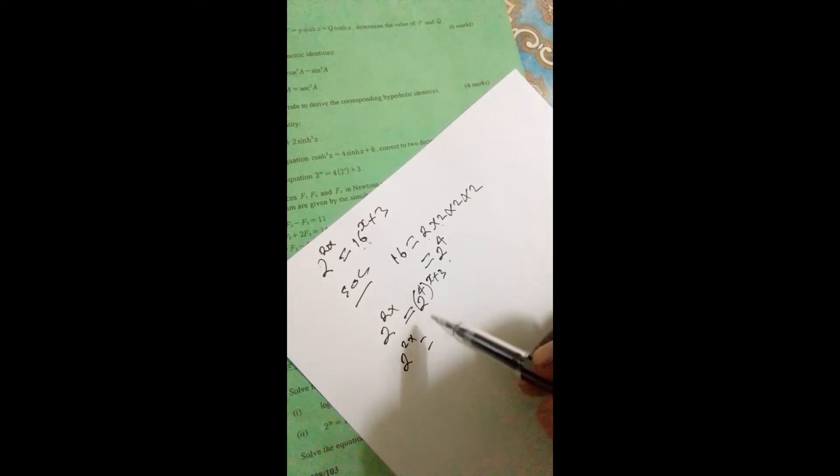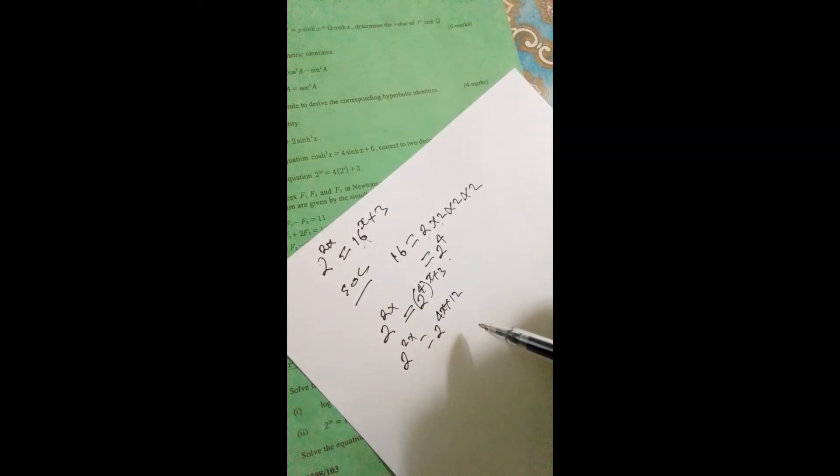This is the same as 2 raised to 2x equals—we now remove this bracket, you multiply 4 by x plus 3—so this will be 2 raised to 4x plus 12.